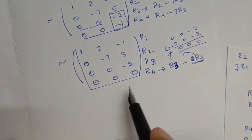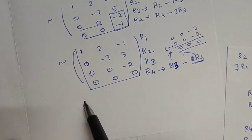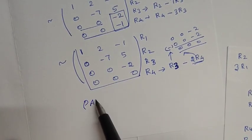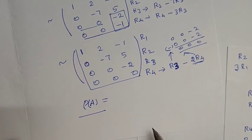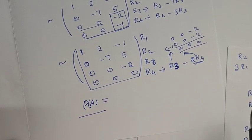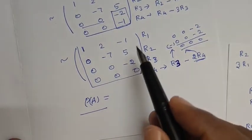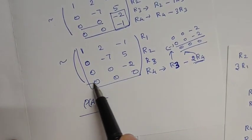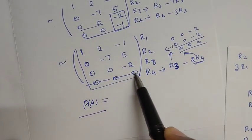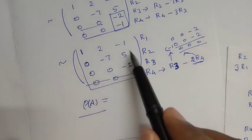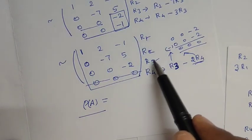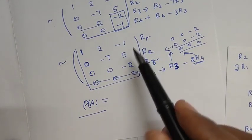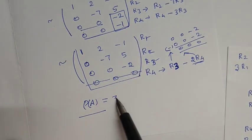Now we can determine the rank. The rank is defined by the number of complete non-zero rows. The non-zero rows are R1, R2, and R3. Therefore, the rank is 3.